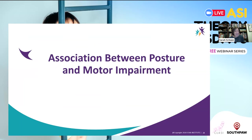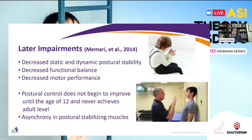Mamari found features of early impairments that persisted into childhood included decreased static and dynamic postural stability, decreased functional balance, and difficulty with motor performance. Individuals on the autism spectrum appear to have a different trajectory of postural control development compared to neurotypical children, who tend to exhibit a resurgence in motor development at the age of five years. In autism, this improvement may not be observed until the child is almost 12 years of age, and in many individuals, it does not reach an adult level.